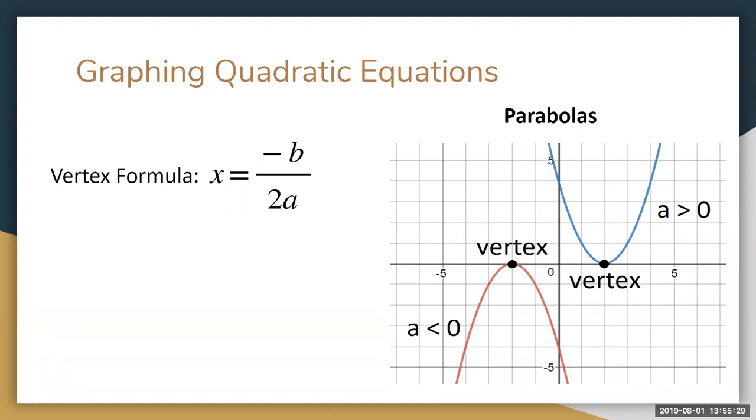You can find the vertex using this vertex formula: x = -b / 2a. Notice this is only the x-coordinate, so to find the y-coordinate you must plug the x-coordinate into the equation and calculate the y separately.